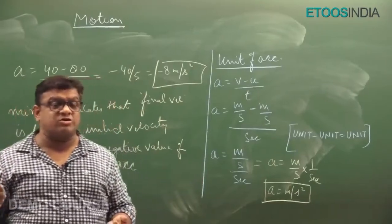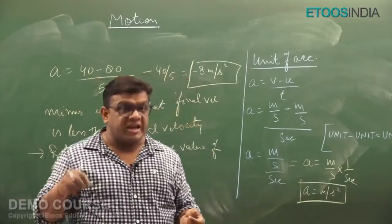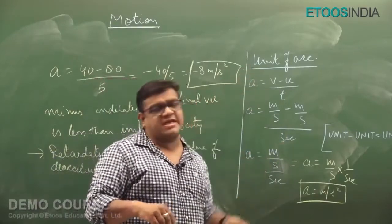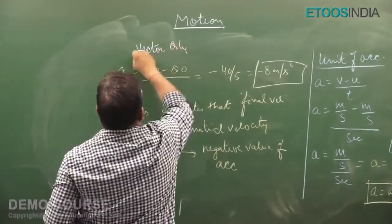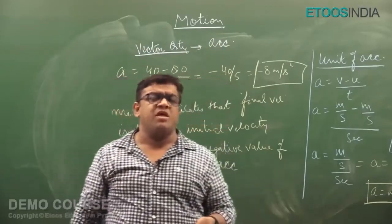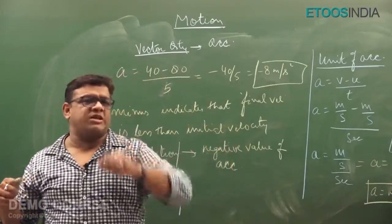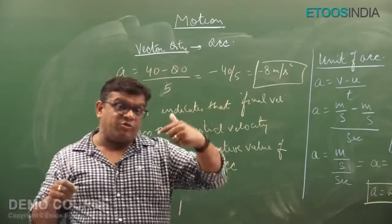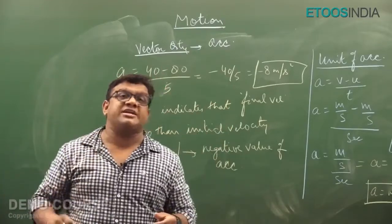Acceleration can also be seen with the pedals of a car — pressing the pedal increases combustion of fuel and increases speed. One more important thing: acceleration is a vector quantity, because when a body is moving in one direction and a force is applied in the opposite direction, the body will stop. Since acceleration depends on direction, it is a vector quantity.